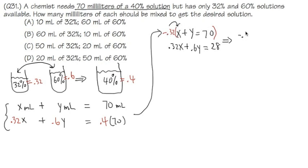That gives us negative 0.32 times 70, which is negative 22.4. For the second equation, since I didn't touch it, I'll bring it down: 0.32x plus 0.6y equals 28. Now we'll add these two equations together.